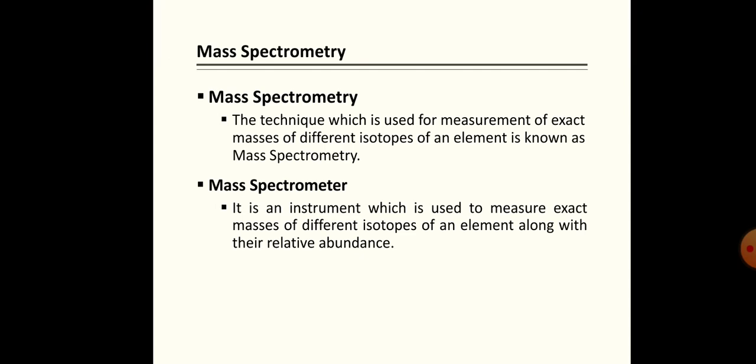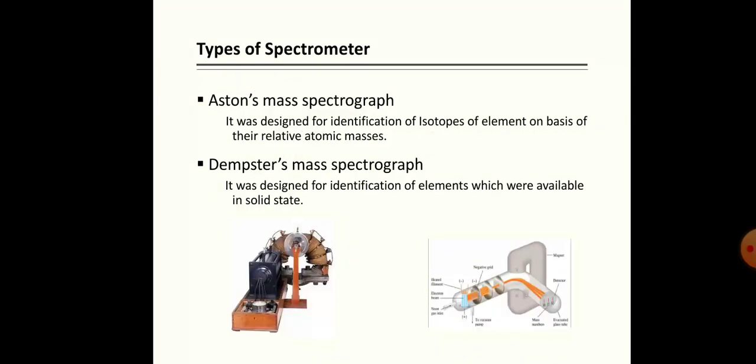There are two types of mass spectrometer: the Aston mass spectrograph and the Dempster mass spectrograph. The Aston mass spectrograph was designed for identification of isotopes of an element, and this element may be in any physical state.